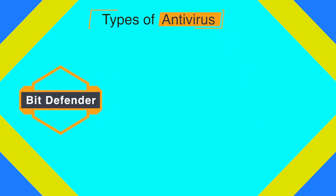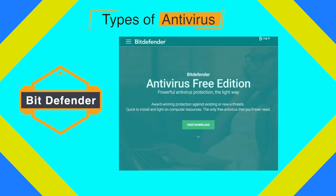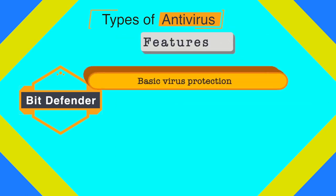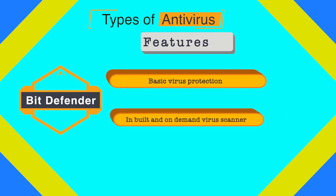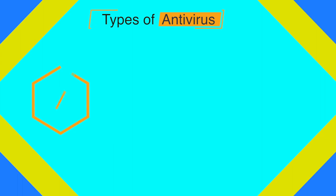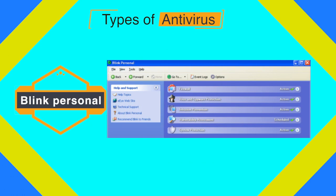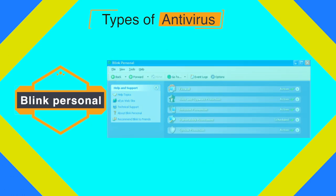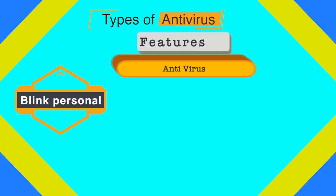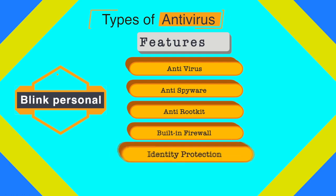The fourth antivirus is Bitdefender. The free edition uses the same certified scanning engine as the pro version, so there's no difference in scanning capability. It provides basic virus protection at no cost, with an on-demand virus scanner and scheduled scanning. The fifth is Blink Personal, an all-in-one security suite free for one year, offering antivirus, anti-spyware, anti-rootkit, a built-in firewall, and identity protection.